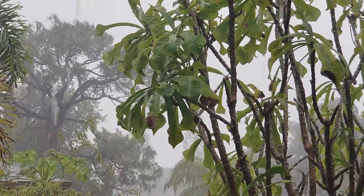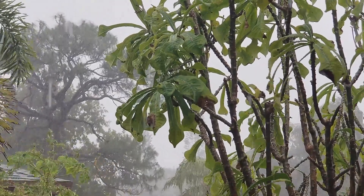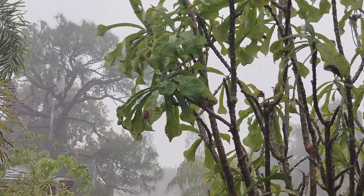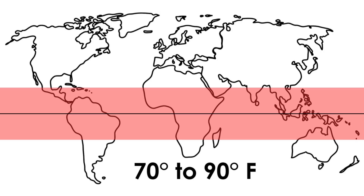Both tropical and temperate rainforests get a lot of rain, but what makes them so different? Tropical rainforests are located in the tropics, near the equator that runs around the middle of Earth. It stays warm year-round near the equator, with temperatures between 70 and 90 degrees Fahrenheit.